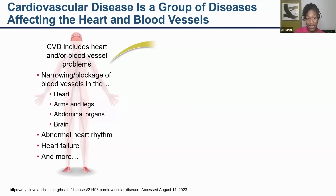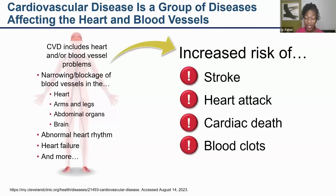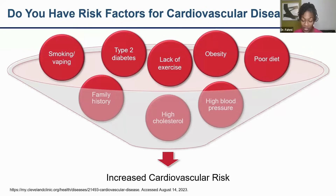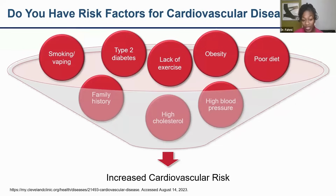Elevated blood sugar and uncontrolled diabetes can affect all these in a negative way, placing people at increased risk of stroke, heart attack, cardiac death, and blood clots. Risk factors for cardiovascular disease include smoking, vaping, type 2 diabetes, sedentary lifestyle, obesity, poor family history, high cholesterol, and high blood pressure.